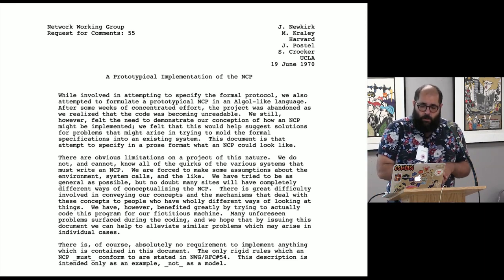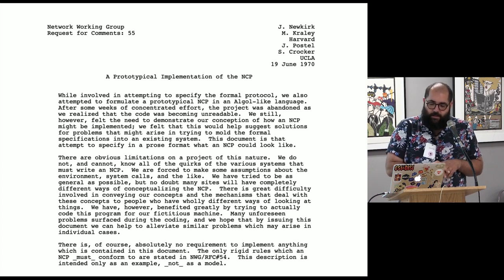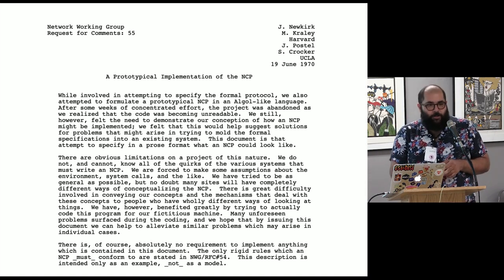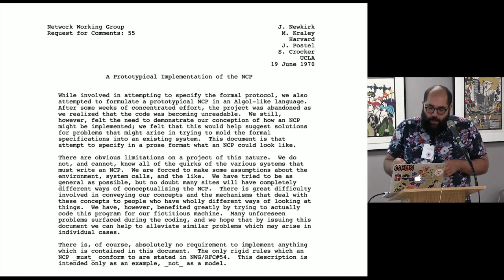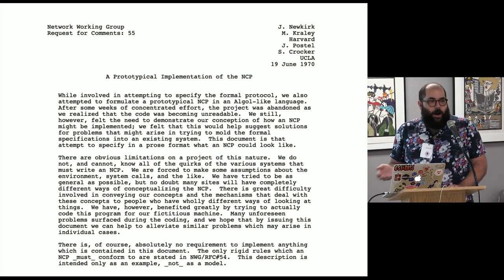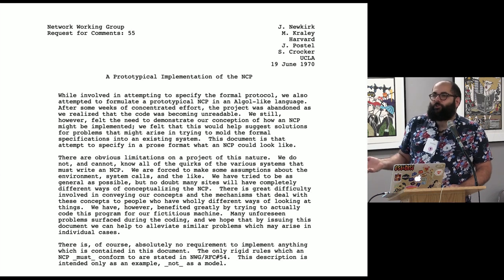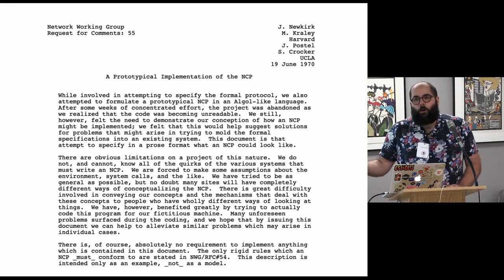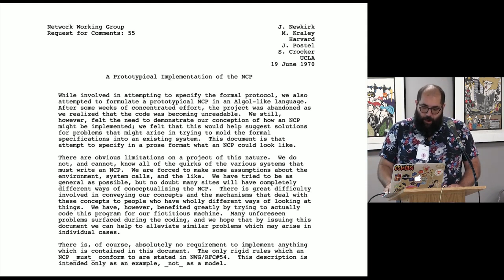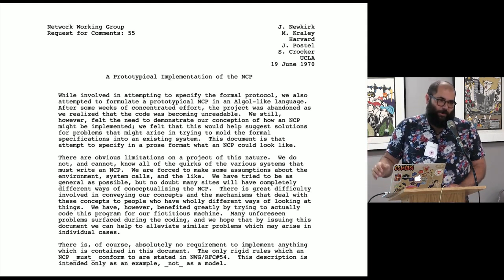On June 19, 1970, a group of computer scientists at UCLA and Harvard University published a document called Request for Comments 55, a prototypical implementation of the network control program. The document describes a program that can live on the computer but lets it talk to the ARPANET. On a modern computer, you might have called it network drivers or something like that. It's the code that lets your machine interpret signals going in and out of it from the internet, or the ARPANET in this case. There was no internet.